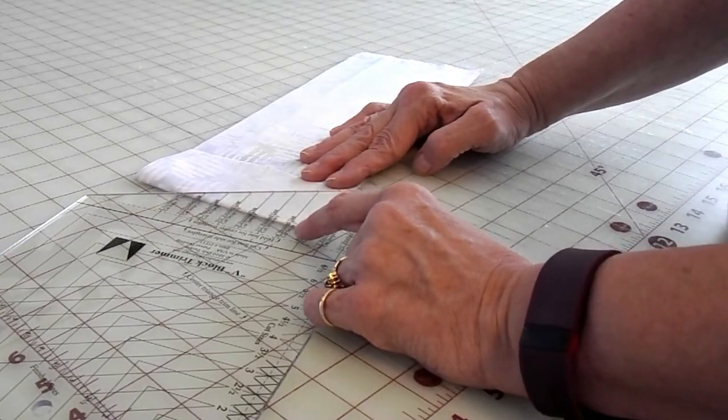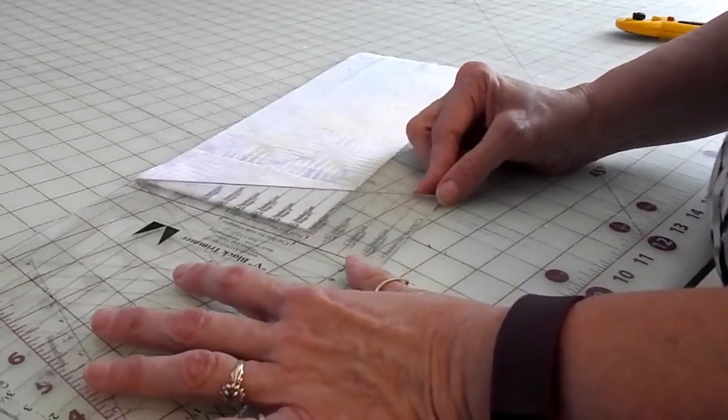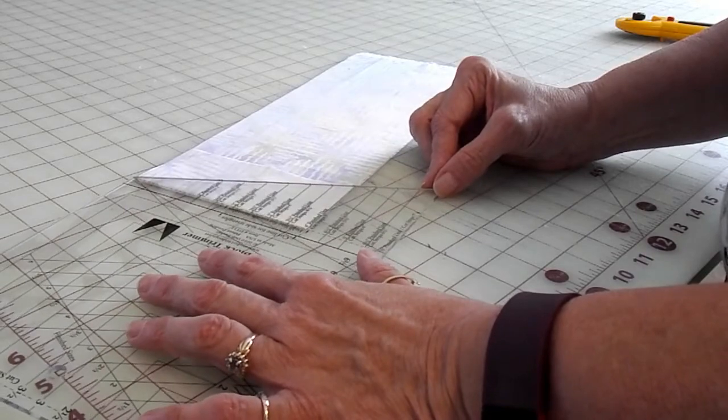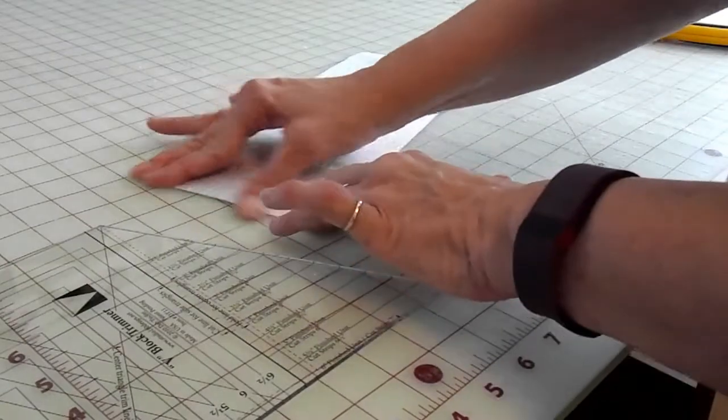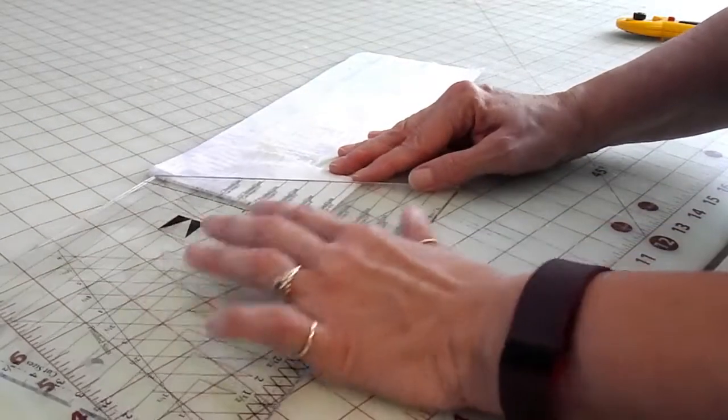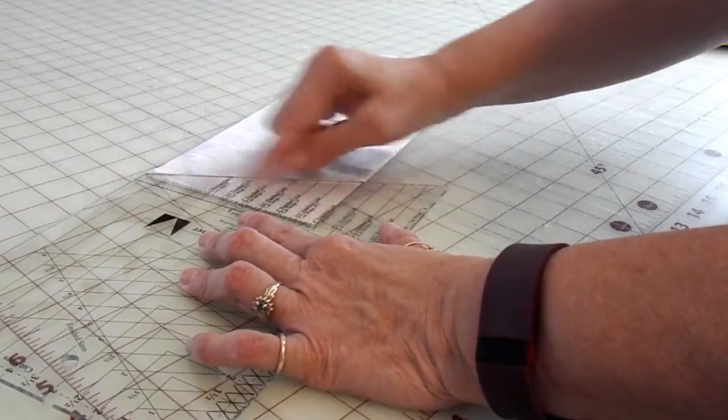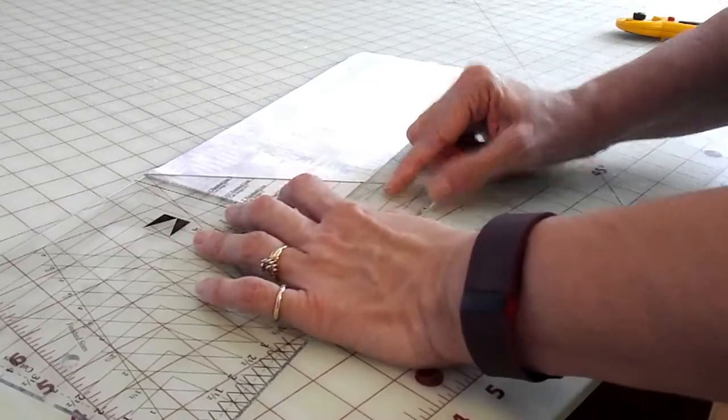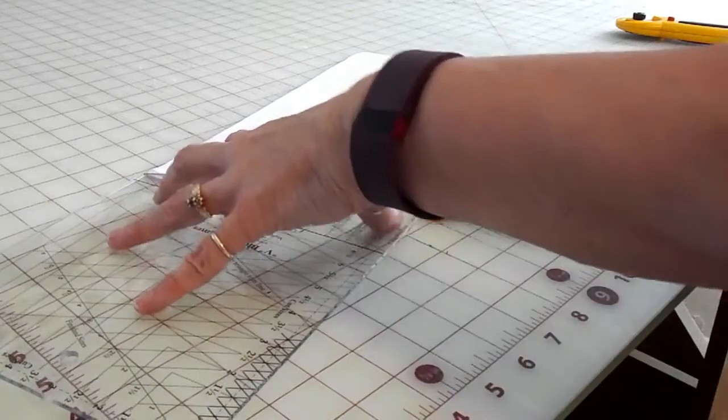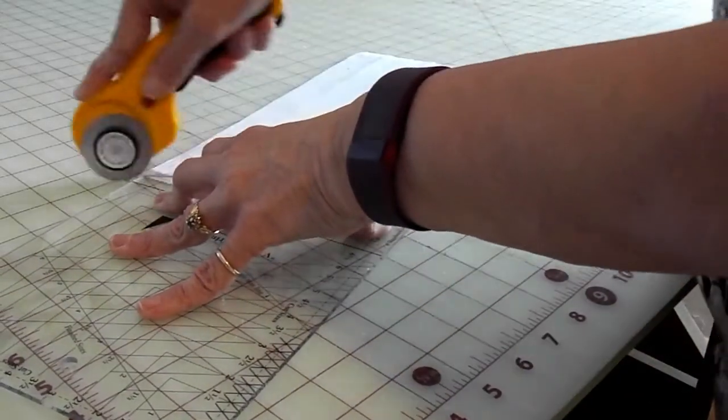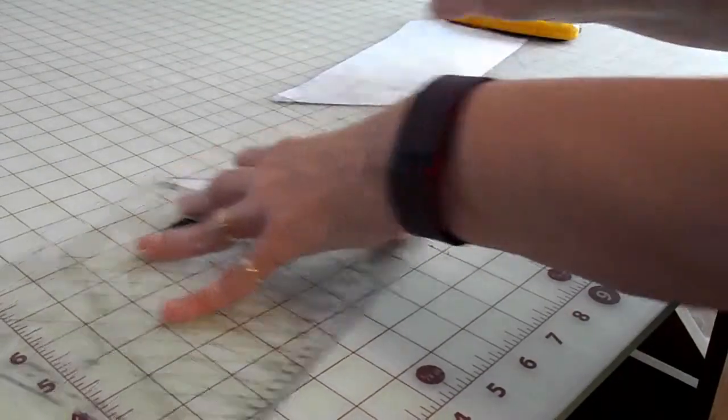If you notice on the ruler, it says this is a four and a half inch or four-inch finished unit, and it says to cut the strips at five inches. We are going to line up the fold line for the center triangles on the fold and the four-inch finished unit line right here at the bottom.